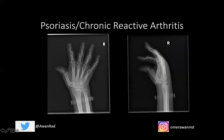Another key finding in psoriasis and chronic reactive arthritis is distal arthritis with erosions in the hands and feet. You can see marked erosions along the PIP joints, almost a pencil-and-cup deformity where one bone telescopes into the other. The proximal phalanx of the third digit is the pencil, and the middle phalanx is the cup. In AS and IBD, peripheral arthritis involves the hip or shoulder — not the hands or feet. In psoriasis and reactive arthritis, peripheral arthritis is more distal, in the PIP and DIP joints.